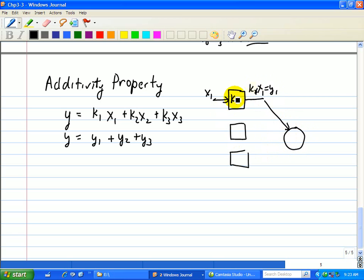Later on we'll show how the multiplier and this adder can be modeled with operational amplifiers. This is K2, K3.